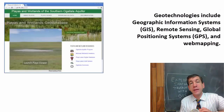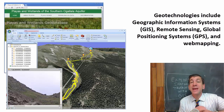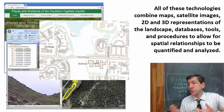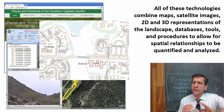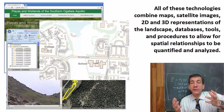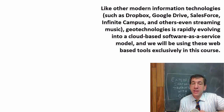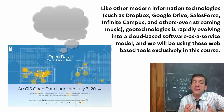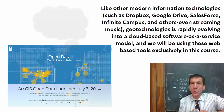Geotechnologies include geographic information systems, or GIS, remote sensing, global positioning systems, or GPS, and web mapping. All of these technologies combine maps, satellite images, 2D and 3D representations of the landscape, databases, tools, and procedures to allow for spatial relationships to be quantified and analyzed. Like other modern information technologies, such as Dropbox, Google Drive, Salesforce, Infinite Campus, and others, even streaming music, geotechnologies have rapidly evolved into a cloud-based software-as-a-service model, and we will be using these web-based tools exclusively in this course.